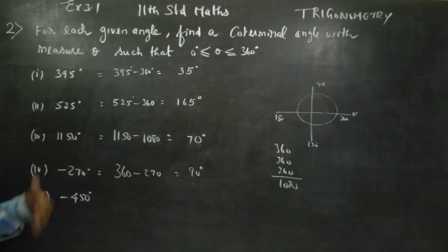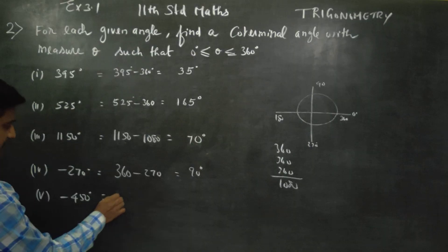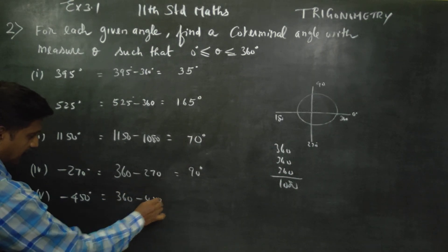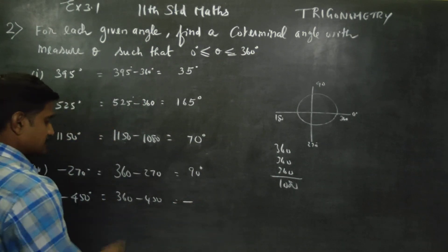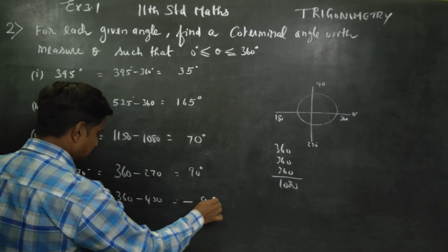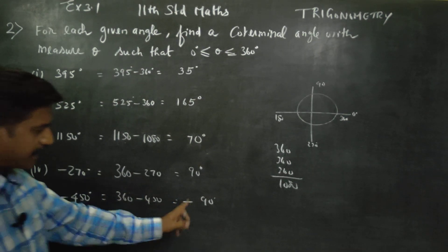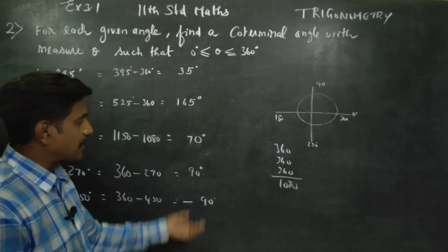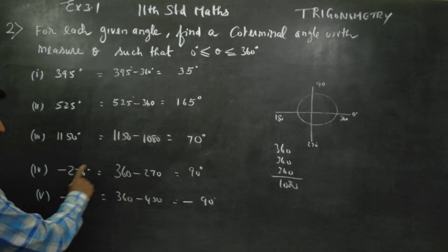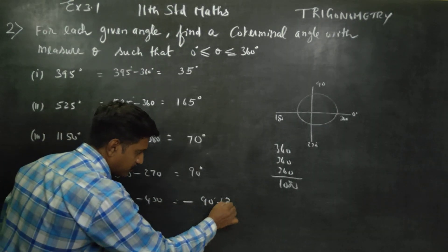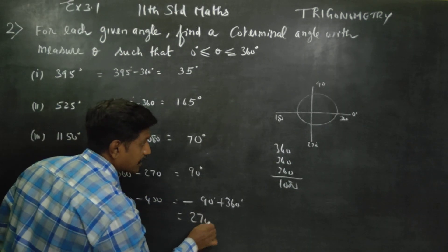For minus 450 degrees: it has an extra 360, so first add 360. Minus 450 plus 360 gives minus 90. Since minus 90 is still negative, add 360 again. Minus 90 plus 360 gives 270 degrees. So 270 degrees is the co-terminal angle.